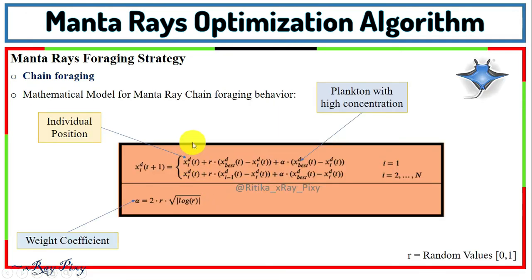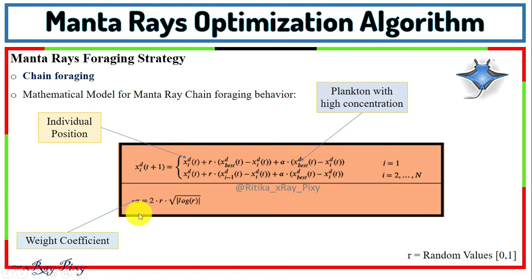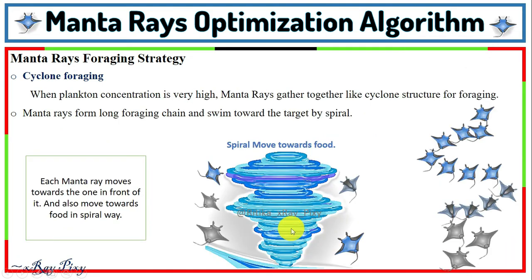This is the mathematical model used for the chain foraging strategy. Here we have the individual position and the best position (the plankton with high concentration), along with a weight coefficient. R is a random value normally distributed within the domain [0, 1].